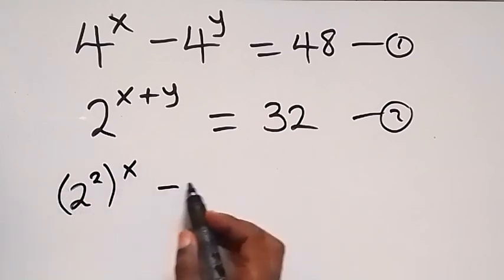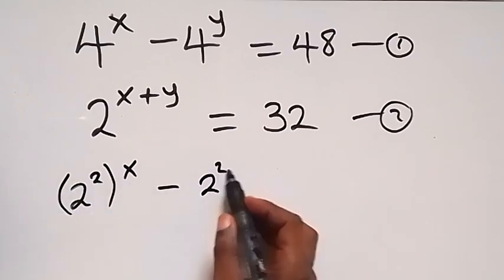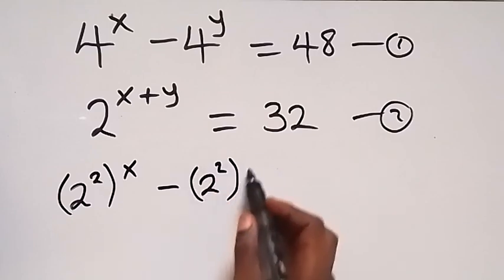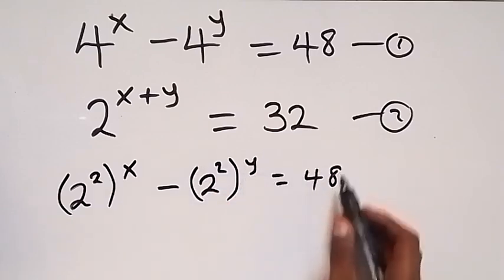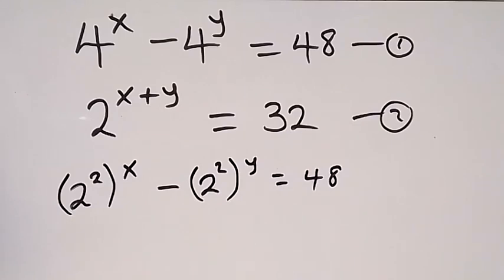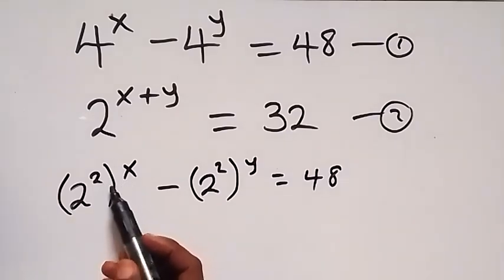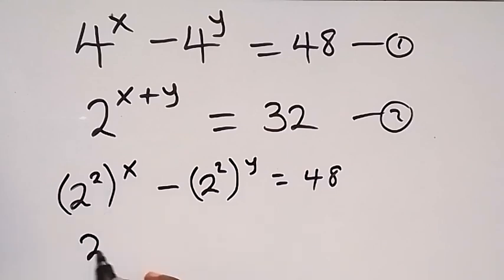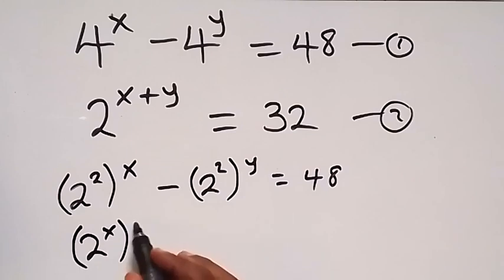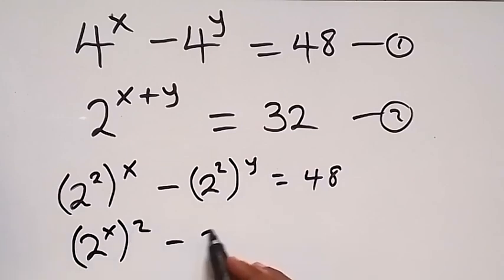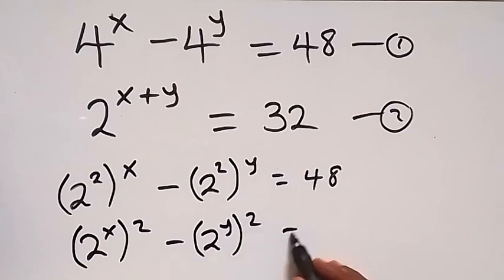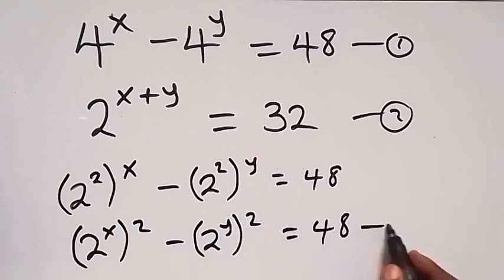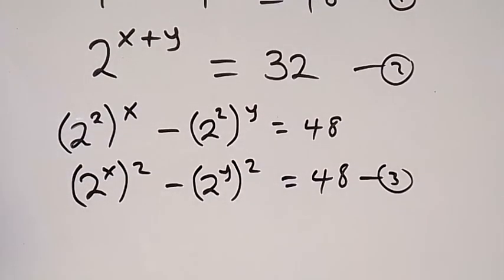From equation 1, let's write that as 2 raised to power 2, then raised to power x, minus 2 raised to power 2, then raised to power y, equals 48. We can interchange the powers since they multiply, giving us 2 raised to power x, then raised to power 2, minus 2 raised to power y, then raised to power 2, which equals 48. Let's call this equation 3.